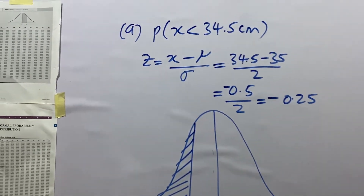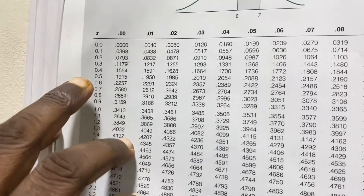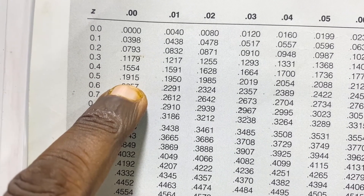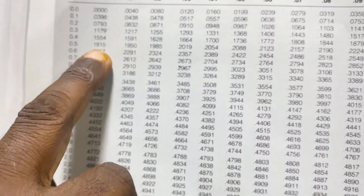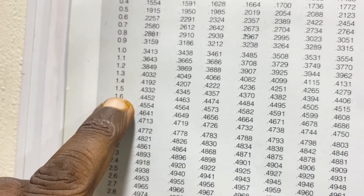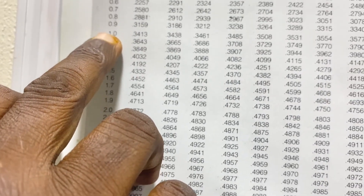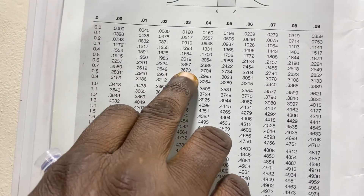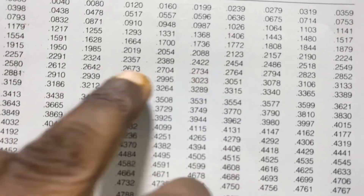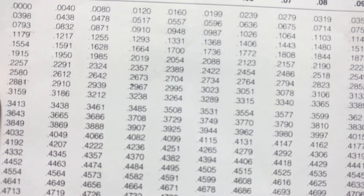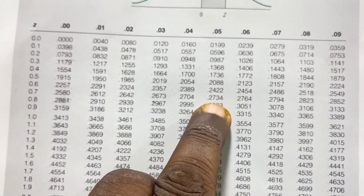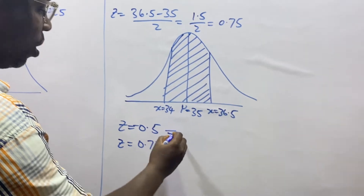Let's now look up the distribution table. For Z = 0.5, we look under 0.00 and get 0.1915. Then for Z = 0.75, we look under 0.05 in the 0.7 row and get 0.2734. Let's keep those values in mind.